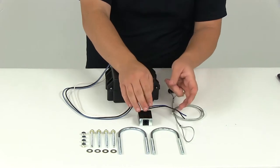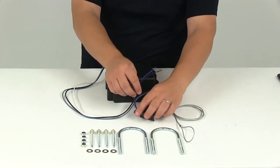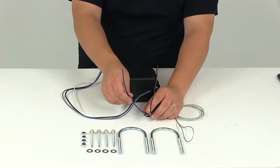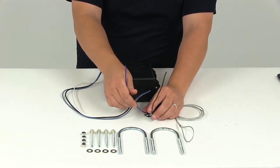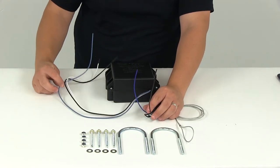On your switch you're going to find a black and a blue wire. The black wire is going to connect to the trailer brake system. The blue wire is going to connect to the blue wire coming out of the battery box.